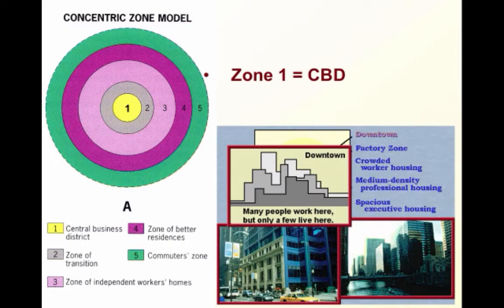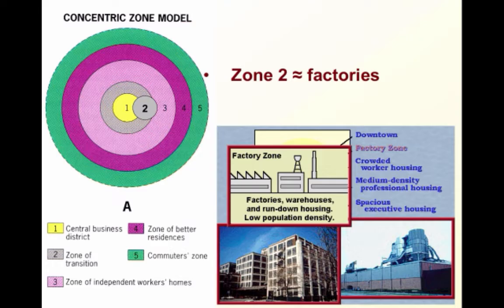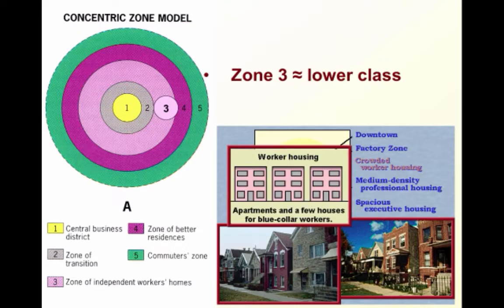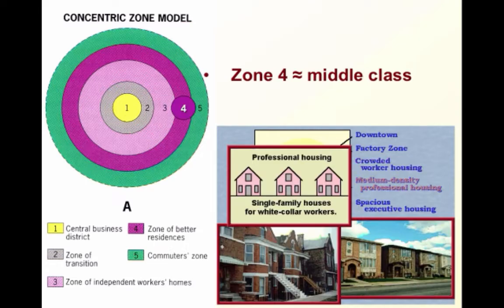Now this can be divided up into different zones. In the very first one, you have the CBD, the downtown area, where many people work but only a few people live. Then moving on to zone two, which is basically where you have a lot of factories, warehouses, and rundown housing — very low population density, but those who do live there are usually very poor. As you move further away, you get to zone three: apartments and a few houses, but mostly blue collar or lower class workers.